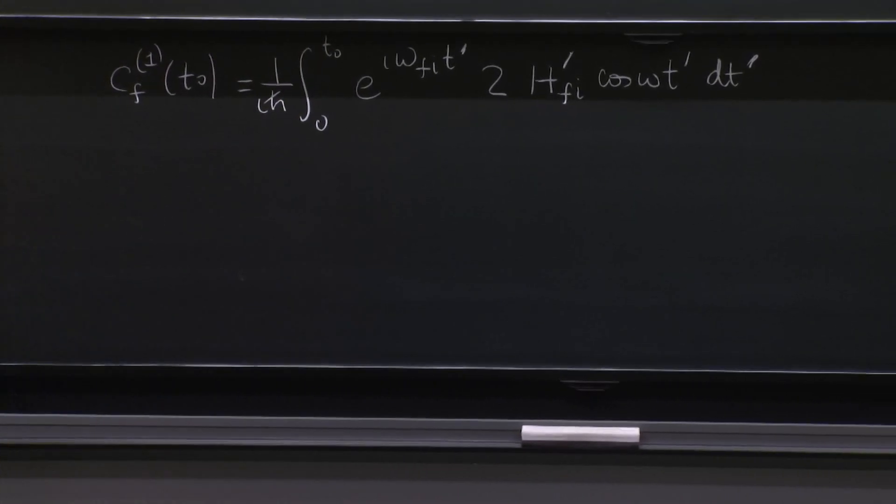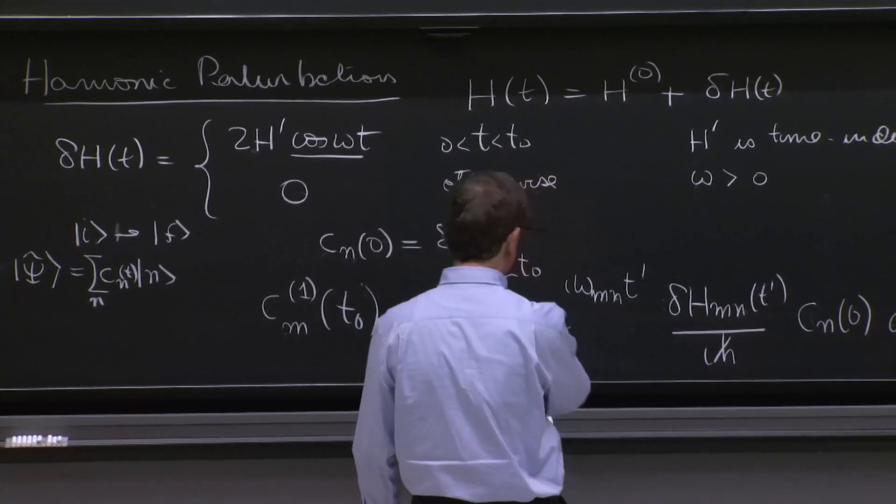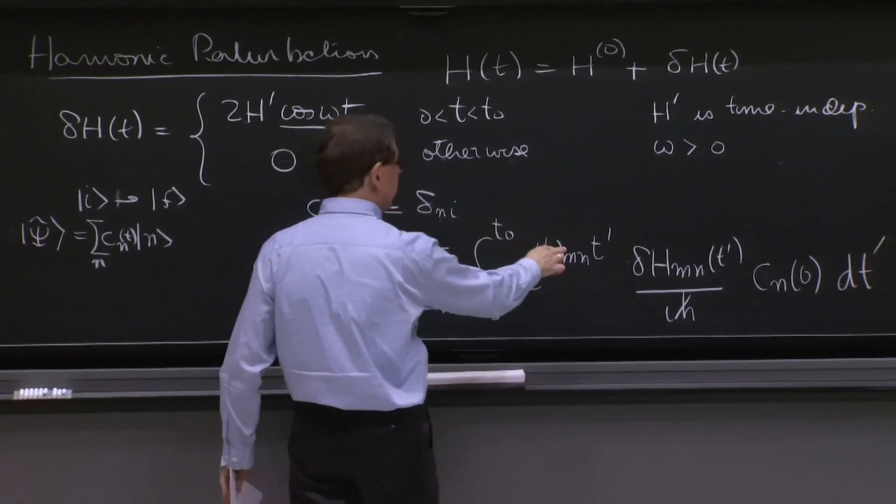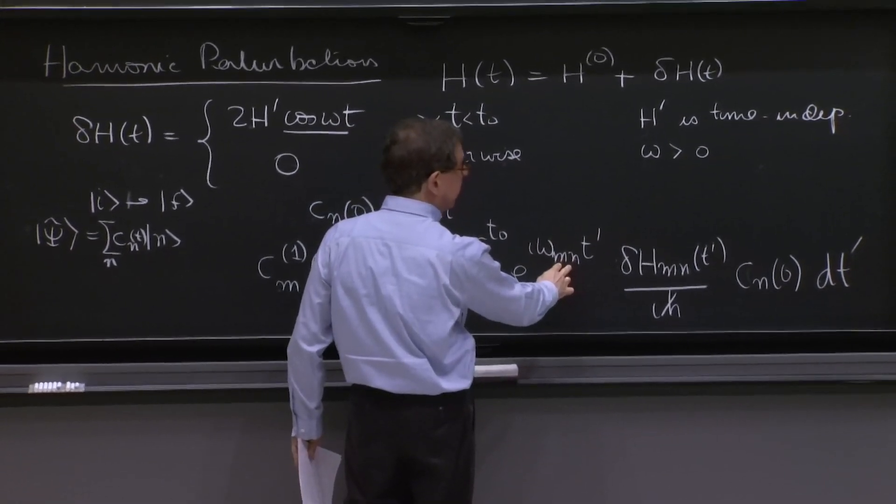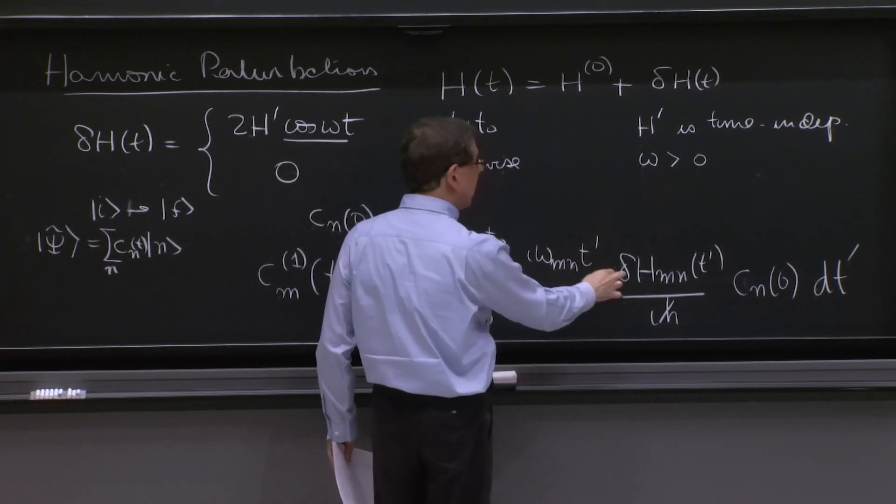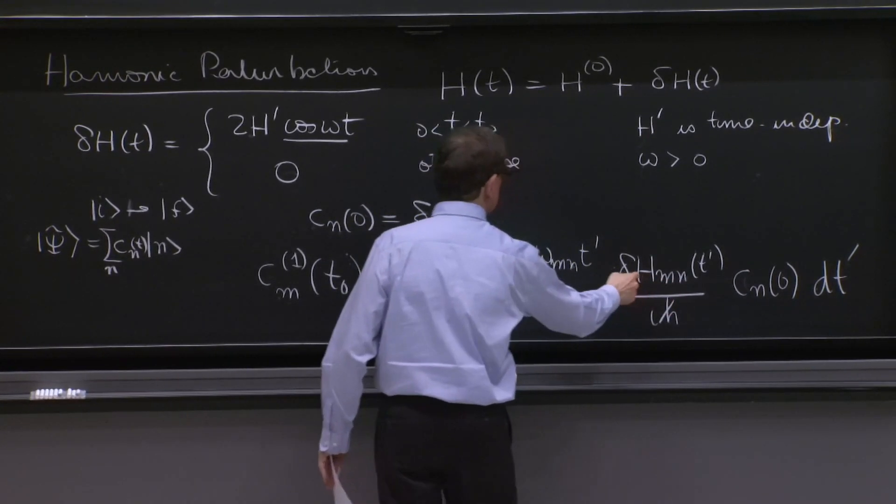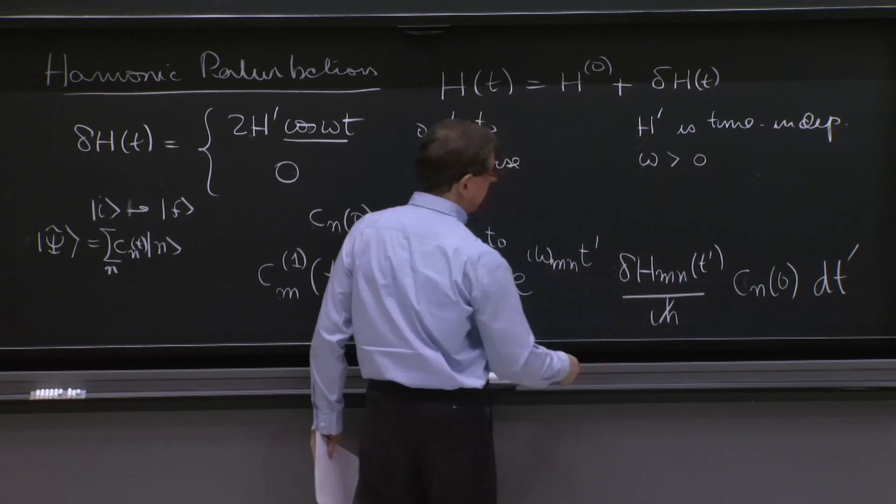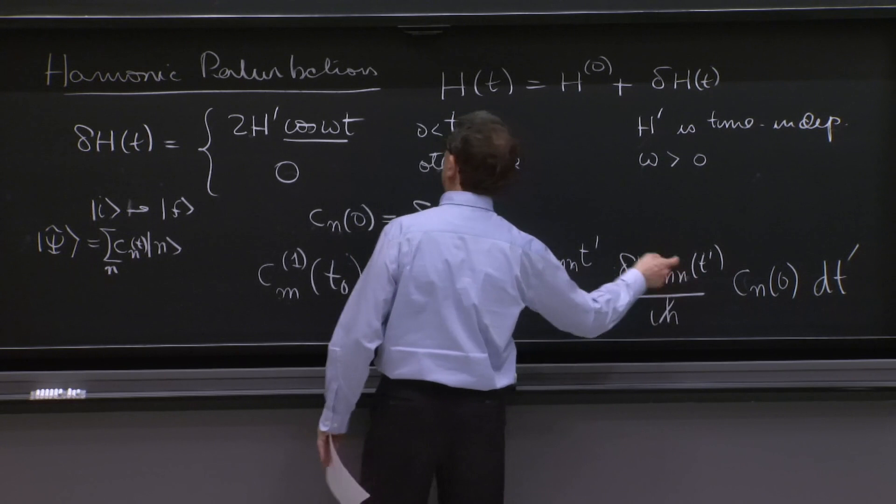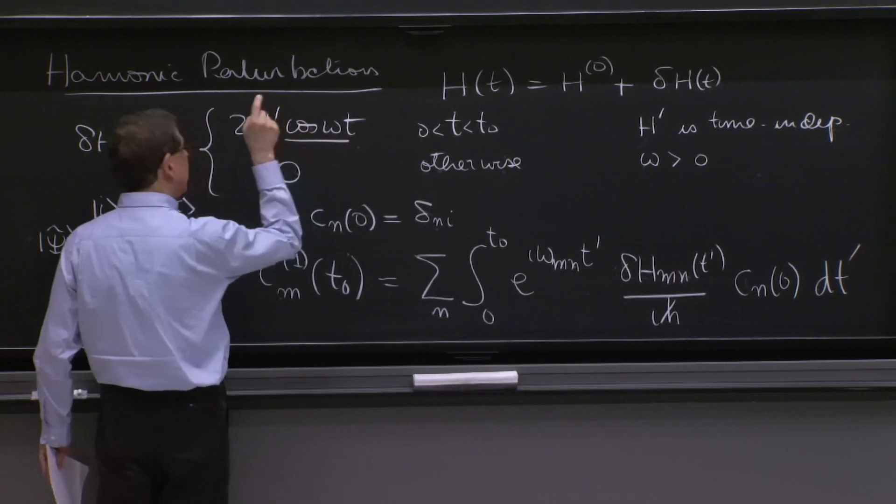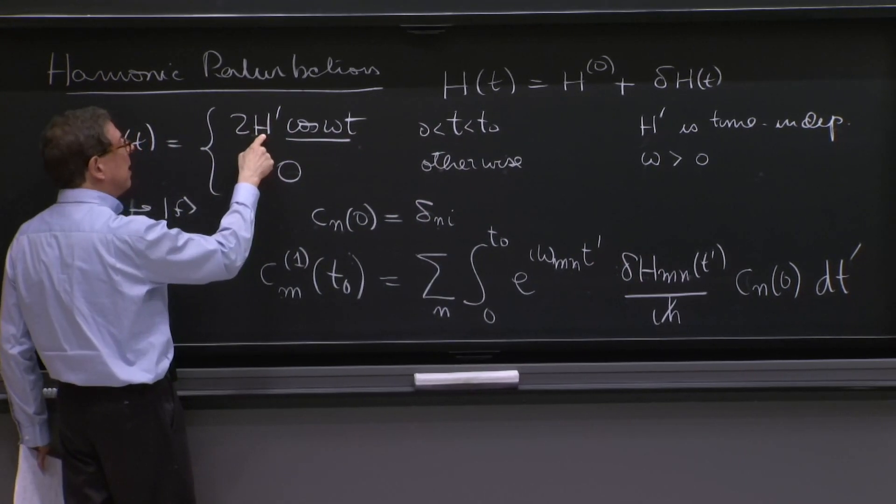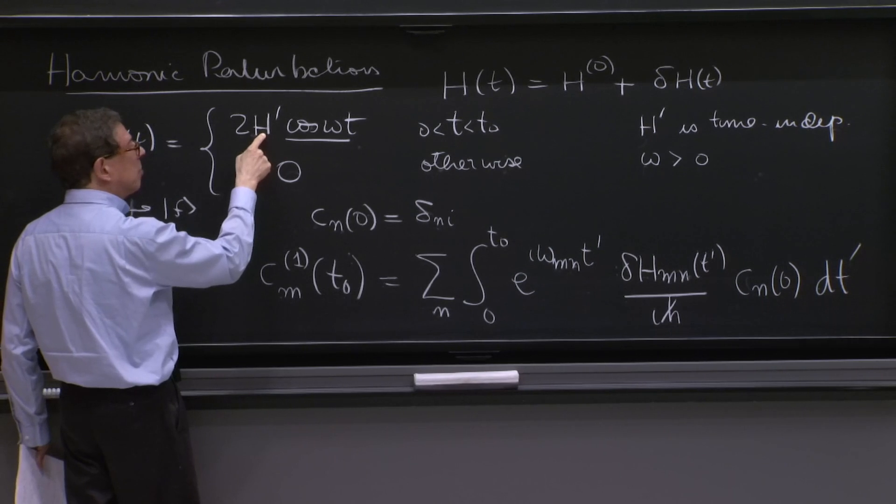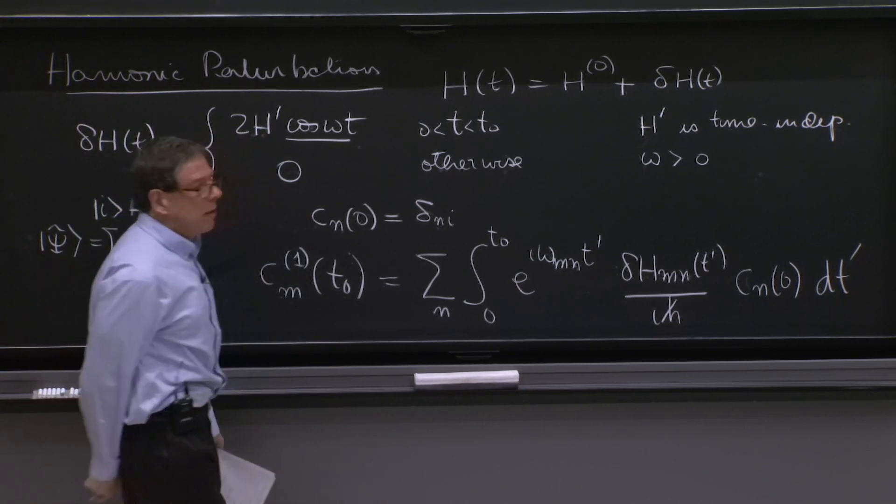There's the i h bar. So I think I got everything right. The sum collapsed. Mn is being replaced by the right labels. Mn here, this is the expectation value between m and n. And that becomes between f and i. And it affects this whole thing. But it just ends up affecting the Hamiltonian h prime here. So I think we're OK.